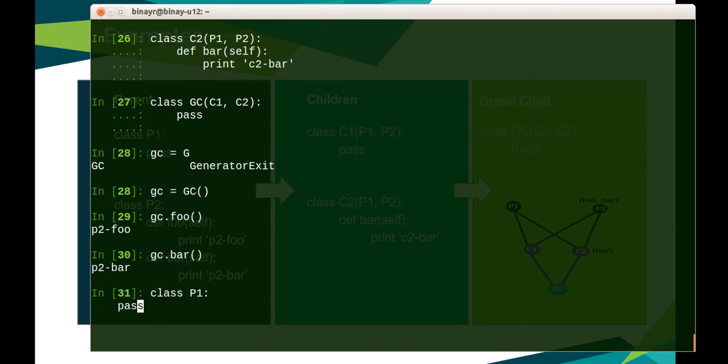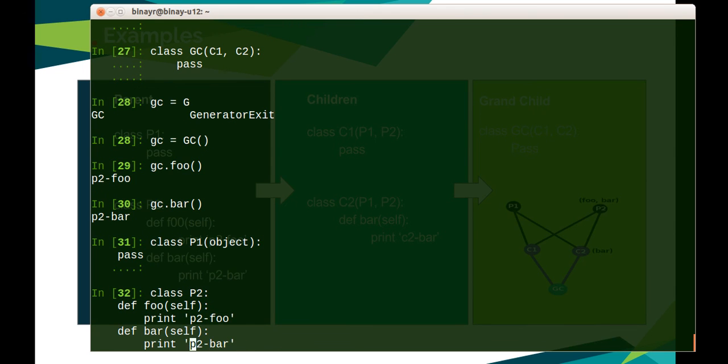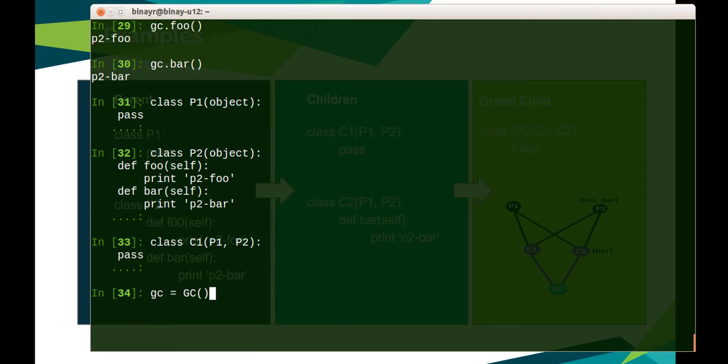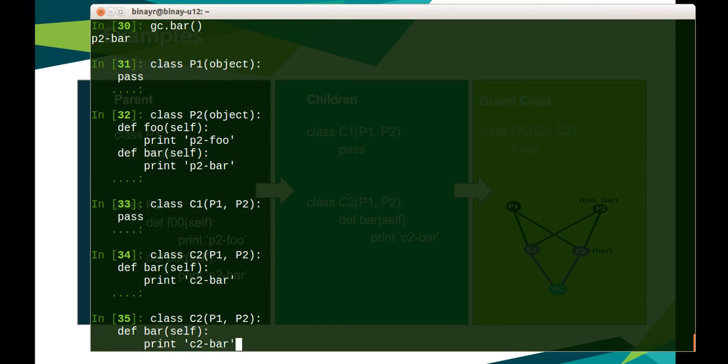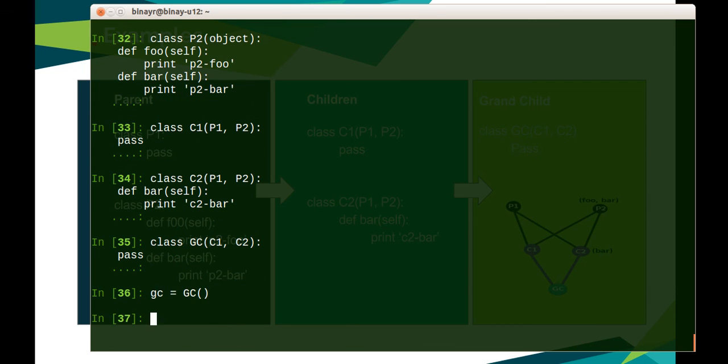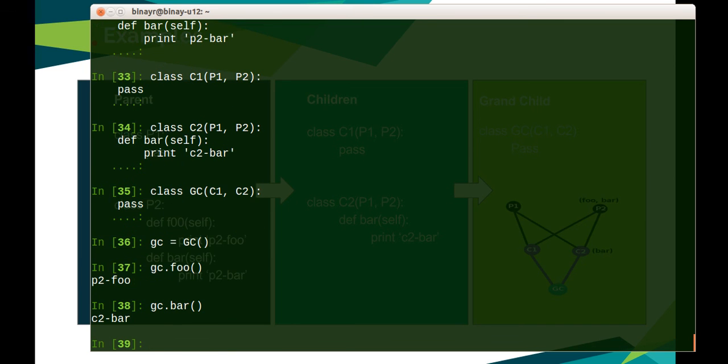Now let's try to create all the classes with new style Python classes. I just have to inherit object here. Same with P2, object. I have to redefine C1 and C2, I don't have to change them. Also GC. Now let's instantiate gc.foo, it's P2 foo as usual. If you go to gc.bar, it's saying C2 bar, the way we have explained. So that's all with MRO.